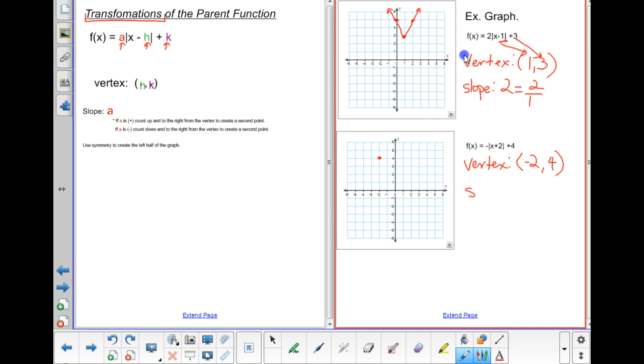And my slope is, hmm. Wait, shouldn't there be a number in front of that absolute value? All I see is that negative. But don't forget that negative 1s can be invisible through multiplication. My slope is actually a negative 1, so that's negative 1 over 1.